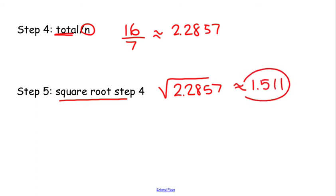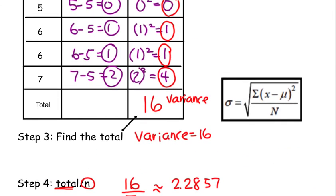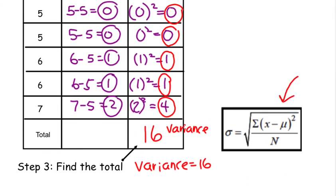This is your standard deviation. What we did is we just used that formula step by step. So you'd say the standard deviation is approximately 1.511 deviations from the mean. And that was just using the formula right there.